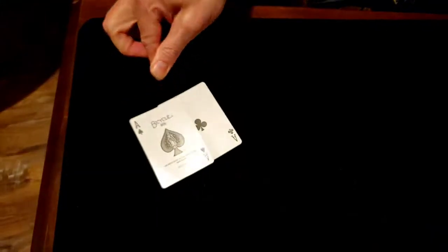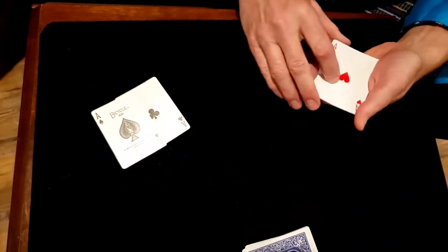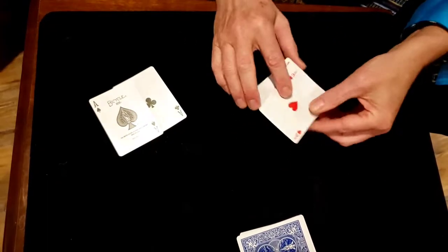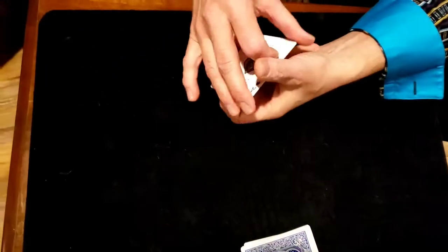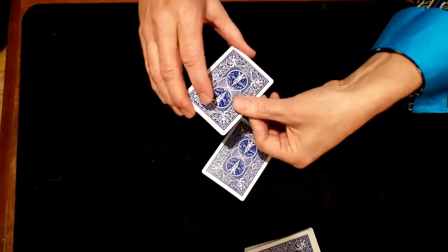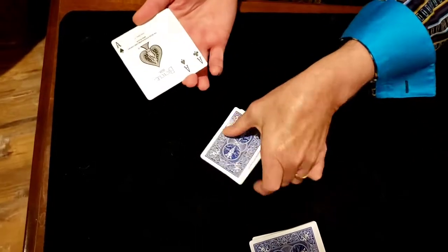And you can see there we have the two black aces. I'll keep the blacks and the reds together so you can follow this. Red ones and these are the black ones.